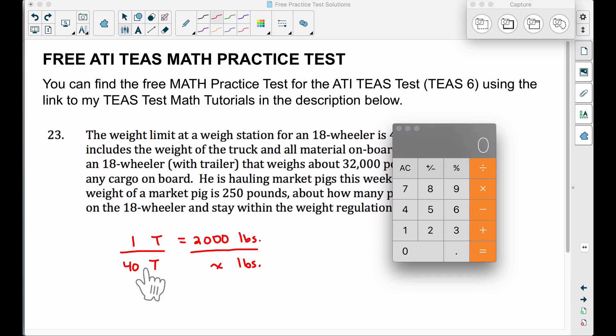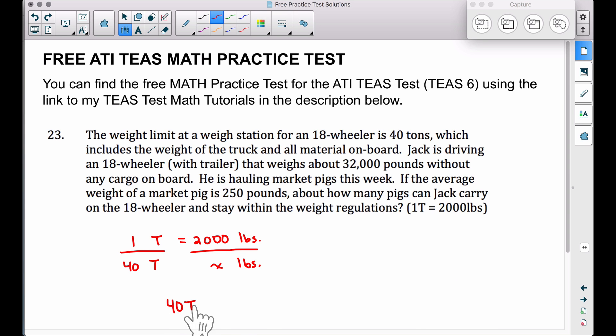Assuming you're familiar with how to solve a proportion, all we're doing is cross-multiplying. One times X is X, so we already have X by itself. Now, 40 times 2,000, that's equal to 80,000. Therefore, 40 tons is equal to 80,000 pounds.